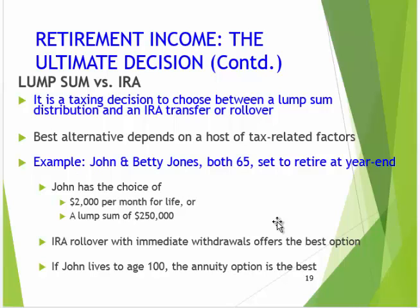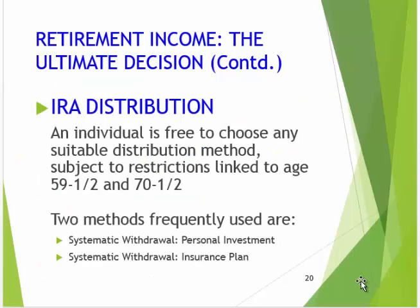The ultimate decision is: do you take a lump sum or do you do an IRA rollover? This is a tax question. Consider this couple — both 65, retiring at end of year. John has a choice of $2,000 a month for life or a $250,000 lump sum. An immediate IRA rollover might be the best option. If John lives to be 100, the annuity option is best — the longer you expect to live, the more favorable the annuity looks.